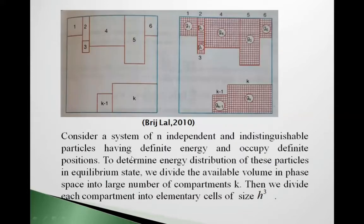Now consider a system of N independent and indistinguishable particles having definite energy and occupying definite positions. To determine their energy distribution in the equilibrium state, we divide the available volume in phase space into a large number of K compartments.